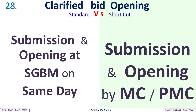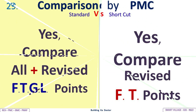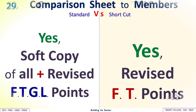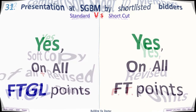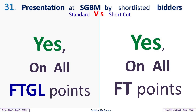Clarified bid opening: Standard — submission and opening at SGBM on the same day; shortcut — submission and opening by MC or PMC. PMC comparison: Standard compares all revised FTGL points; shortcut compares only revised FT points. Comparison sheet to members: Standard — soft copy of all revised FTGL points; shortcut — only revised FT points. Presentation at SGBM by shortlisted bidders: Standard — on all FTGL points; shortcut — on FT points only.